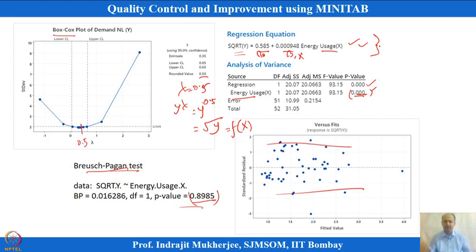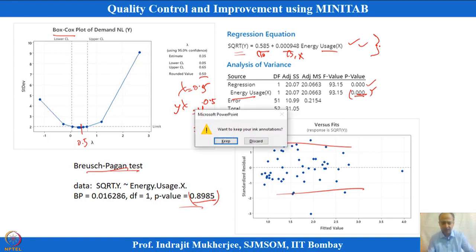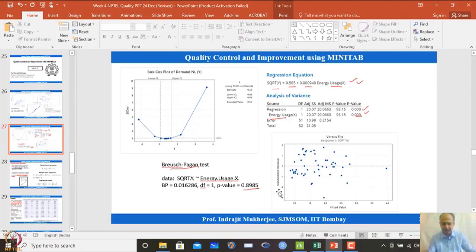We predict square root of y and then square it to get the actual value of y. This is one of the examples demonstrating how to handle heteroscedasticity. Let us now see how this was done in MINITAB.